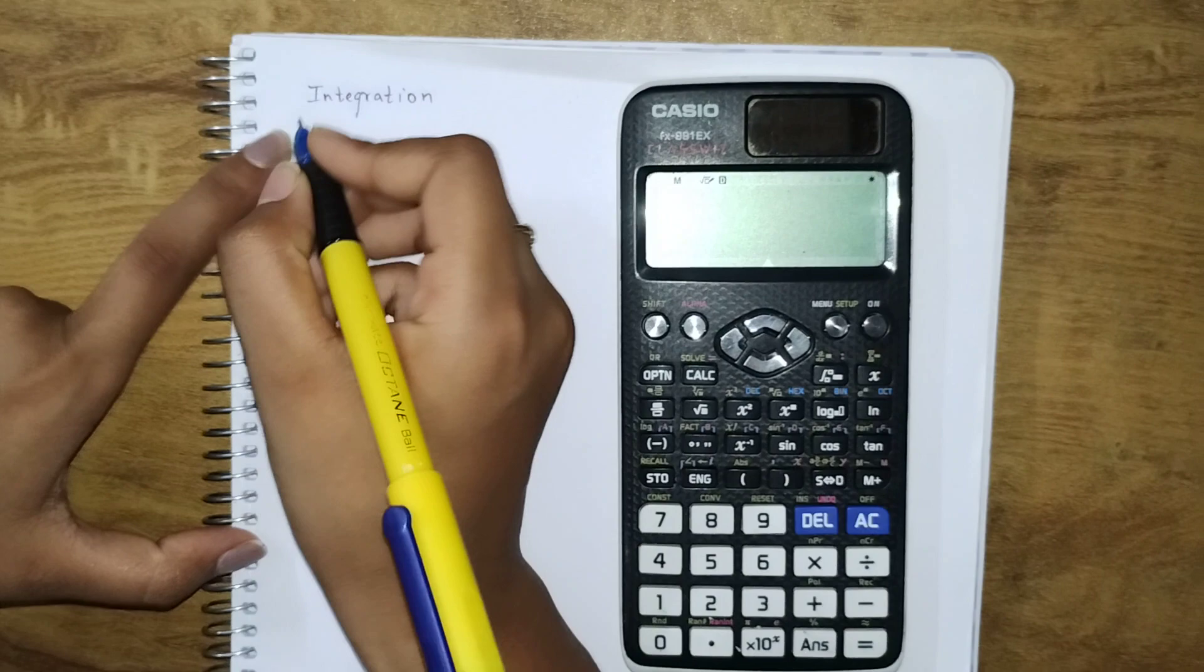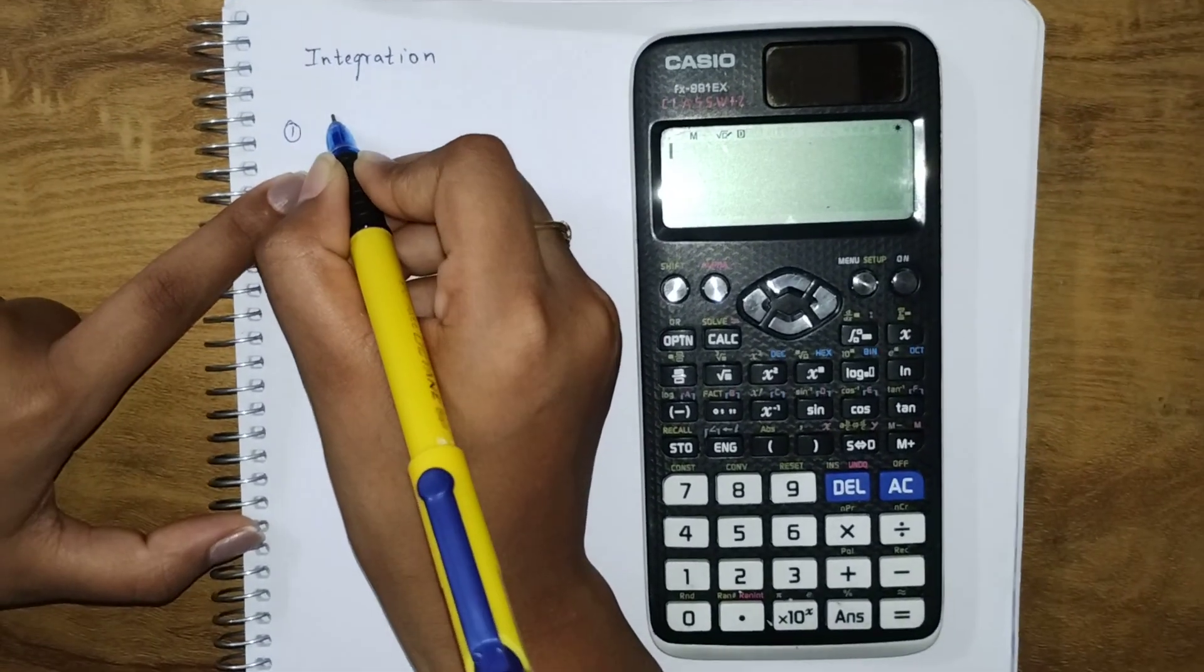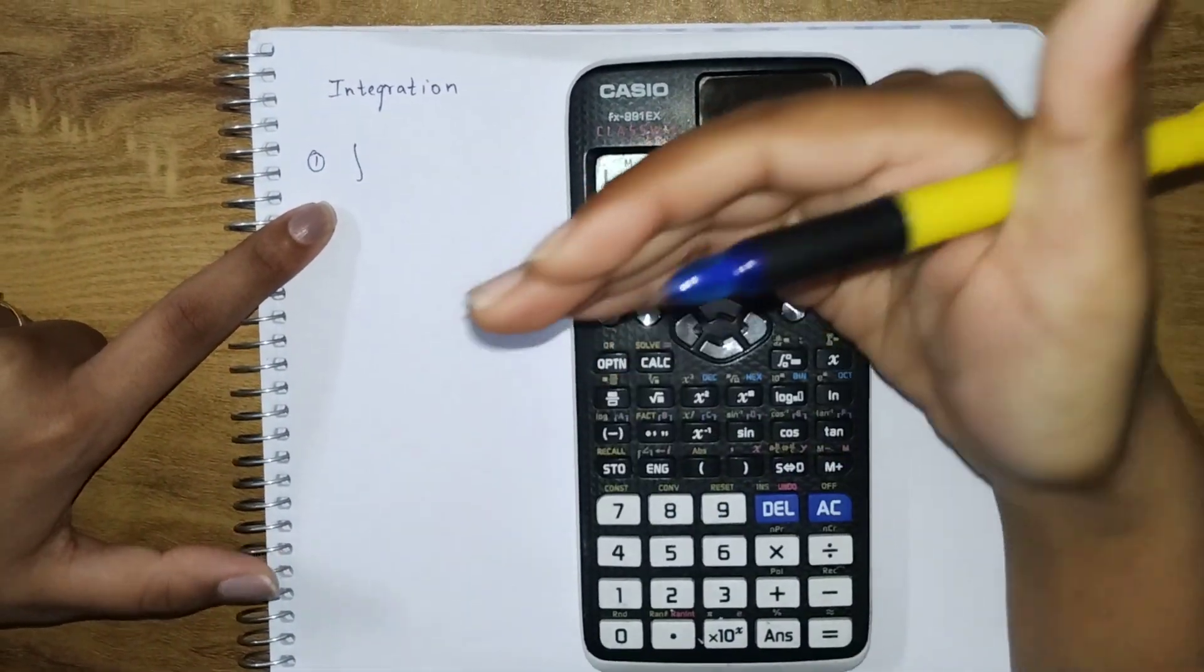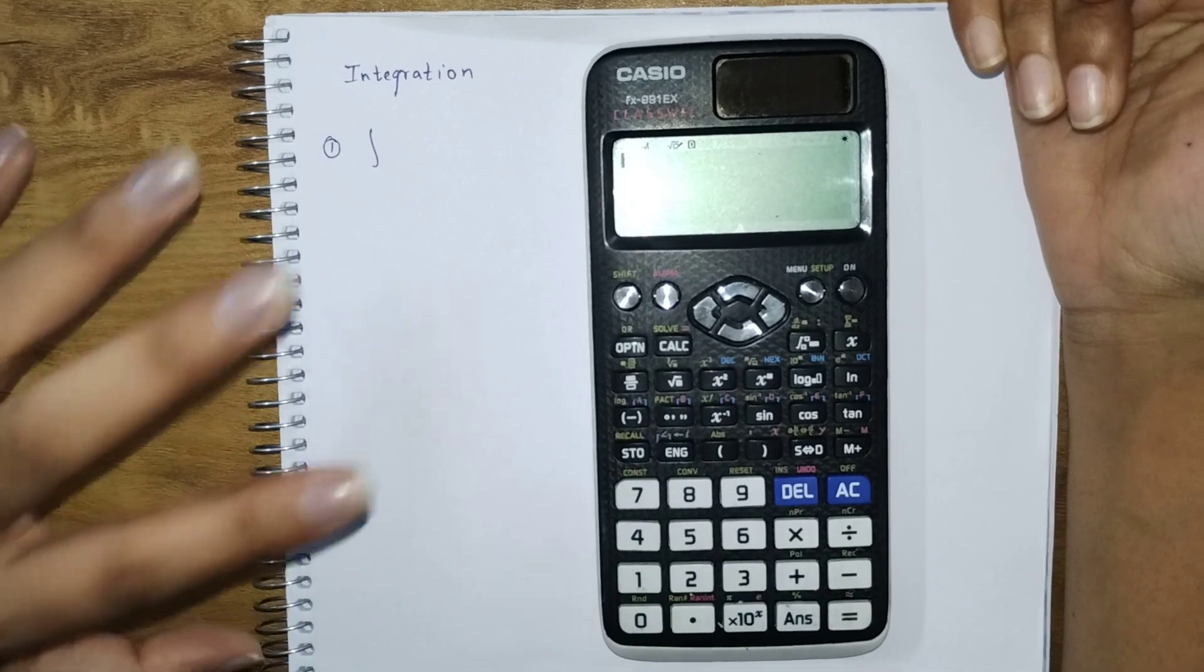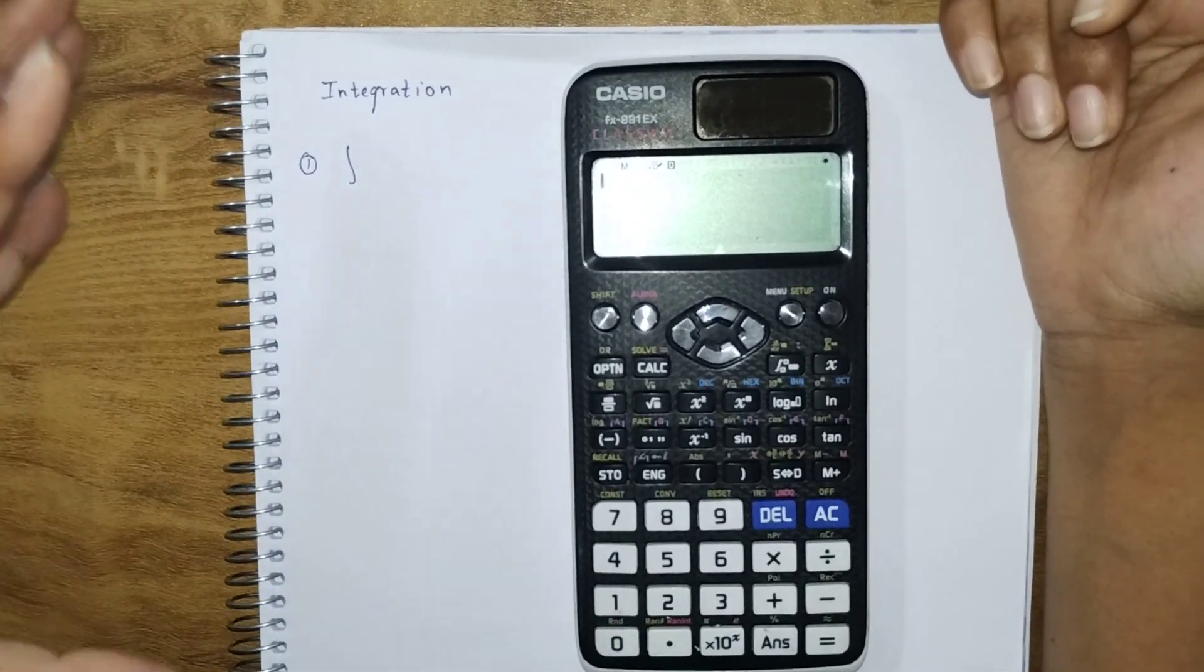First, I'm going to take a basic example. One thing about using the scientific calculator to calculate the integration part is it only works for definite integrals, not indefinite integrals. So we have to keep that in mind.